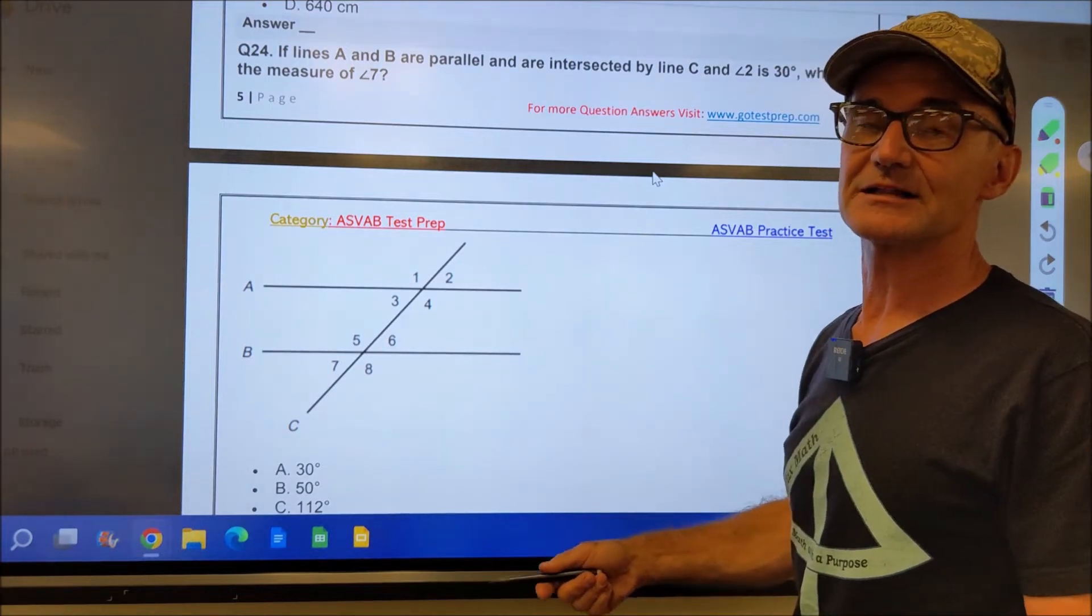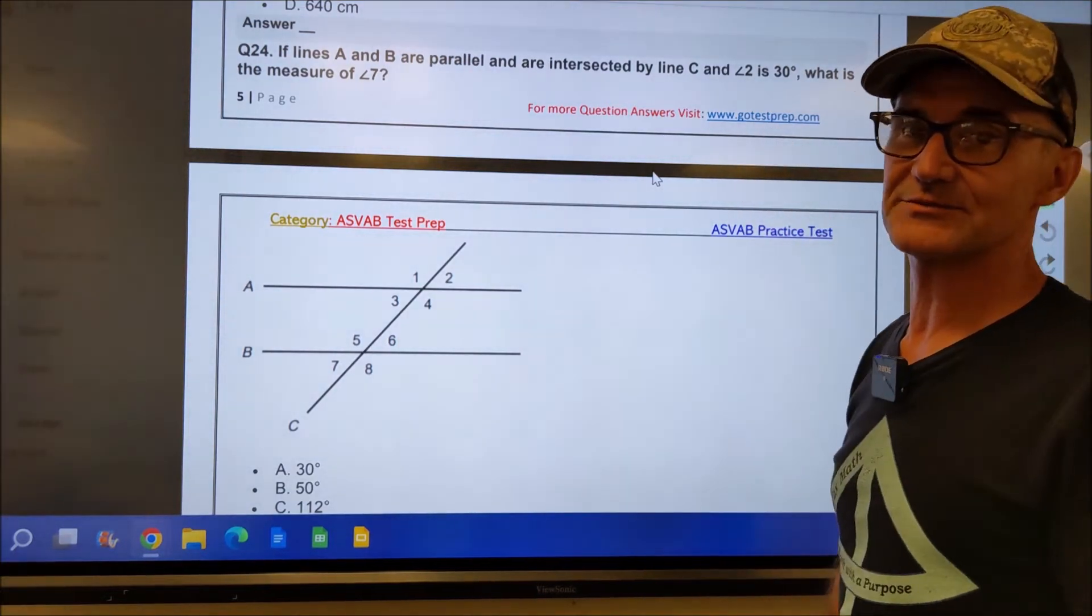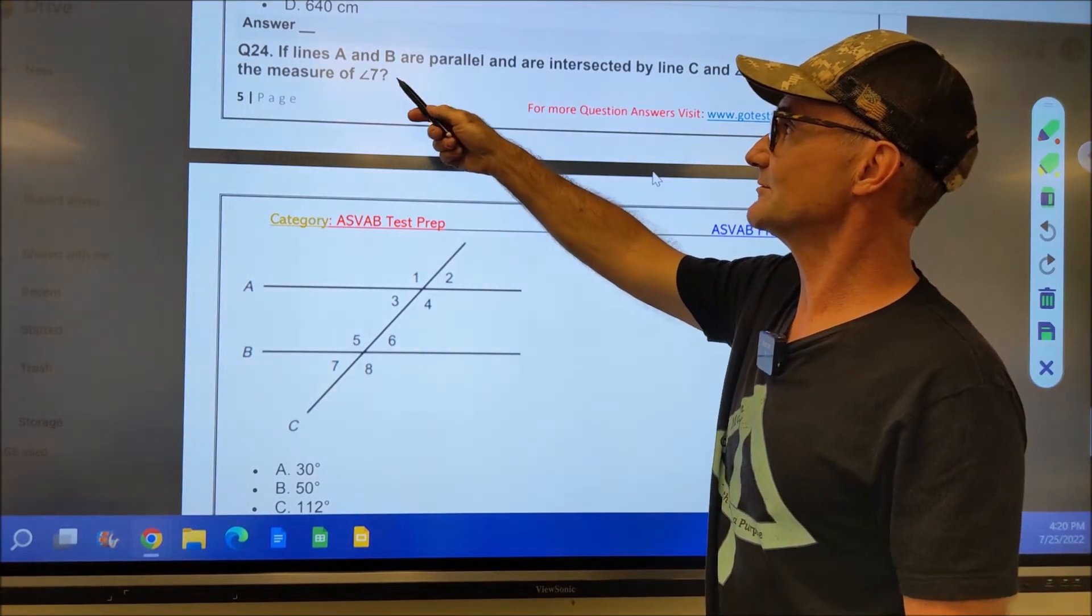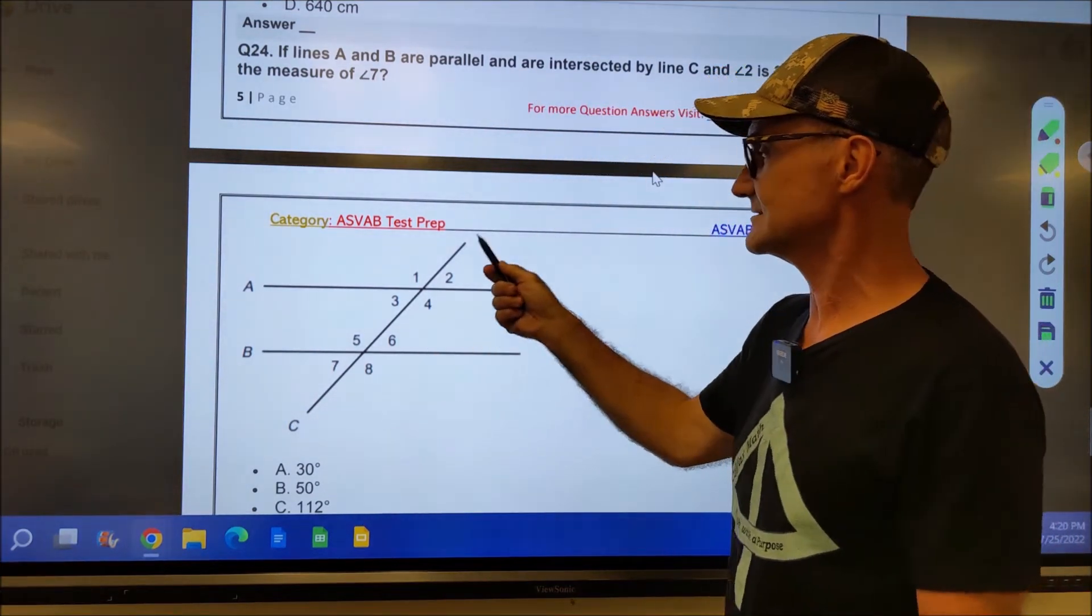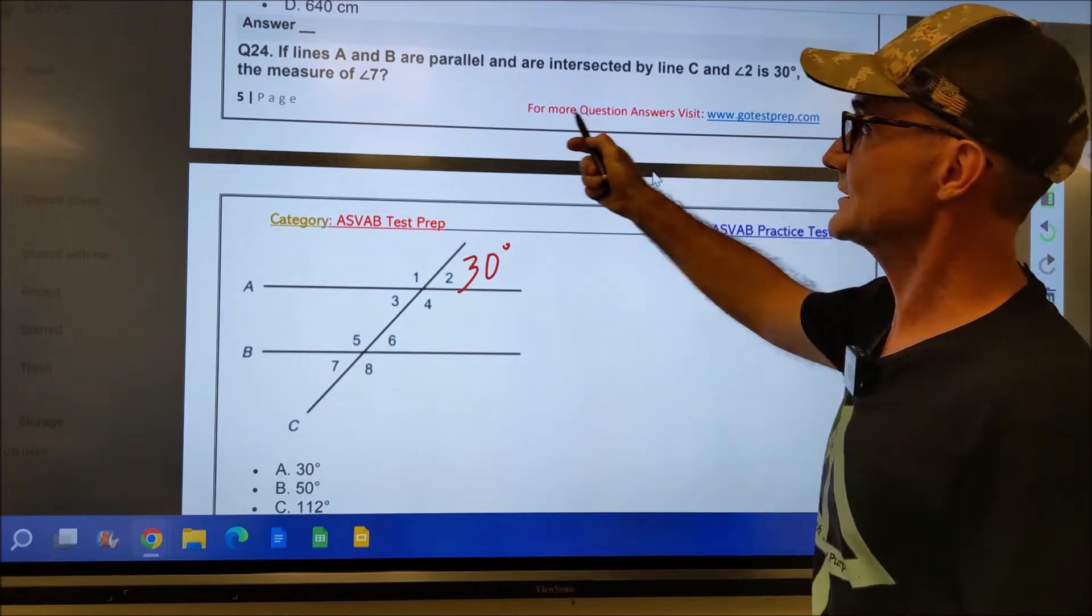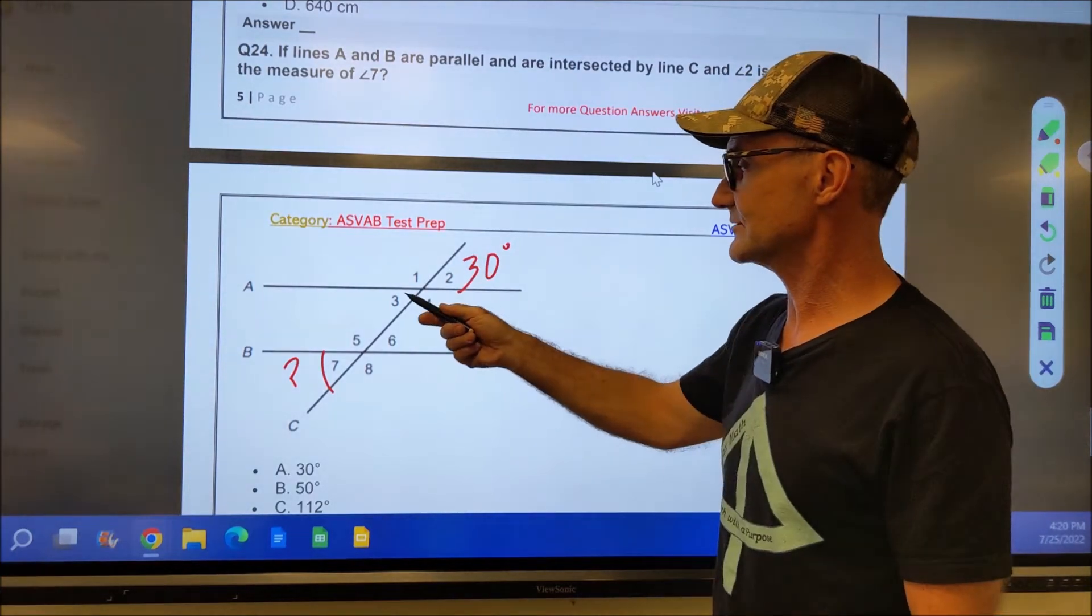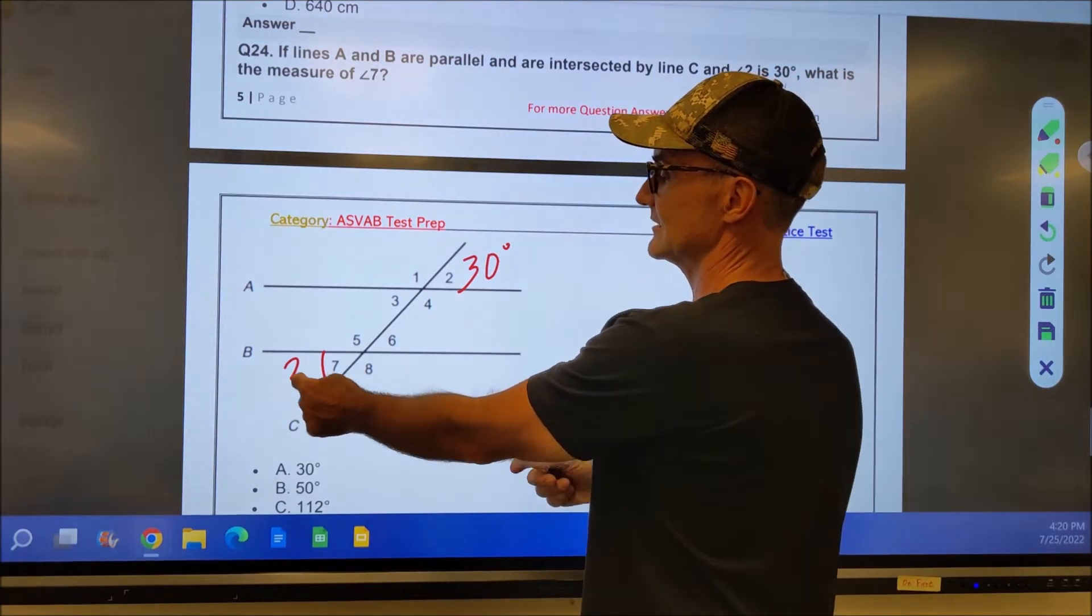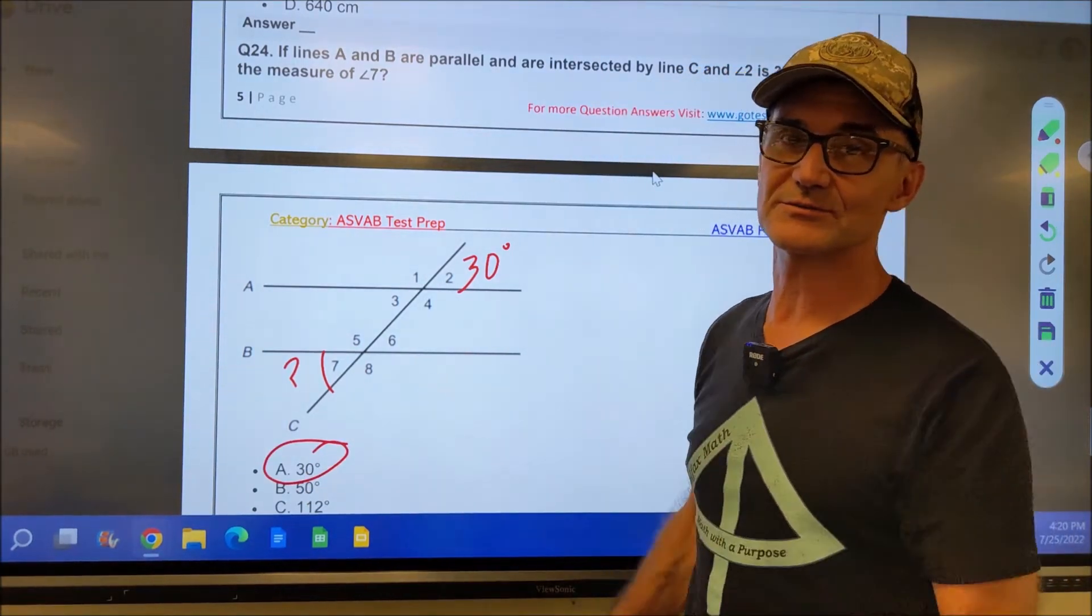Here's a sample math knowledge problem from the ASVAB test. I just got this off the internet. It is from gotestprep.com. If lines A and B are parallel and are intersected by line C, angle 2 is 30 degrees. What is the measure of angle 7? I could go through that whole process, vertical angles, alternate interior angles, or I could just see that these are alternate exterior angles. If this is 30, this is also 30. There's answer A right there, and that's how easy it is once you know some of that terminology.